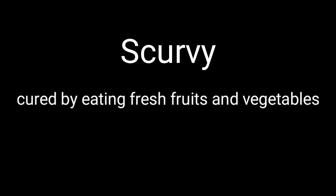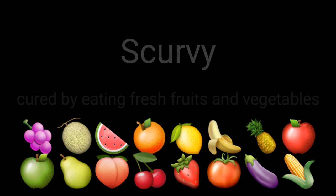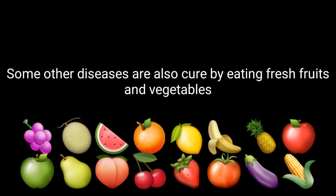In between this time, there was another scientist named James Lind. In the year 1752, he discovered a disease — he noticed that scurvy could be cured by eating fresh fruits and vegetables. He declared that some diseases can be cured by eating certain kinds of foods, such as fresh fruits and vegetables.